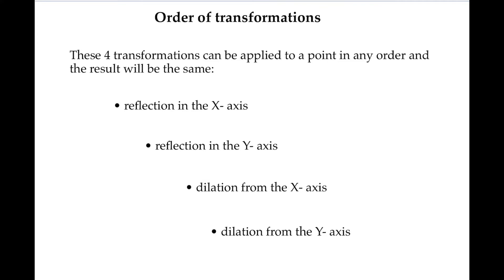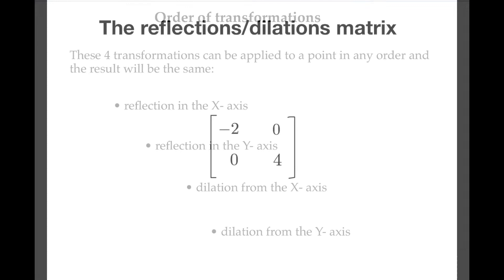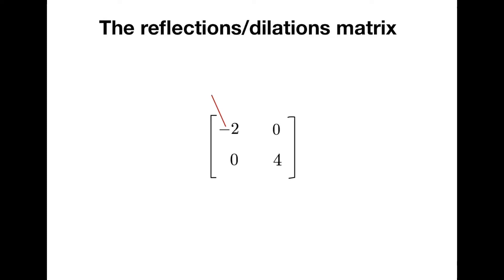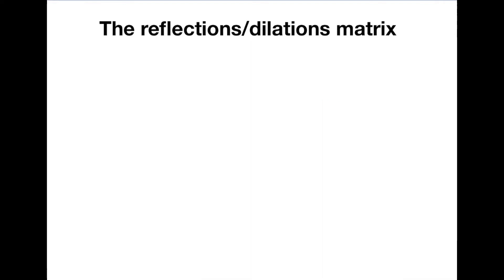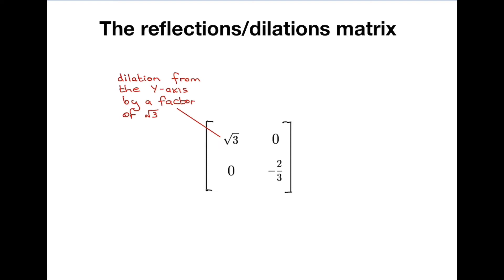In this matrix we see a reflection in the y-axis, a dilation from the y-axis by a factor of 2, and a dilation from the x-axis by a factor of 4. And in this matrix we see a dilation from the y-axis by a factor of root 3, a reflection in the x-axis, and a dilation from the x-axis by a factor of two thirds.